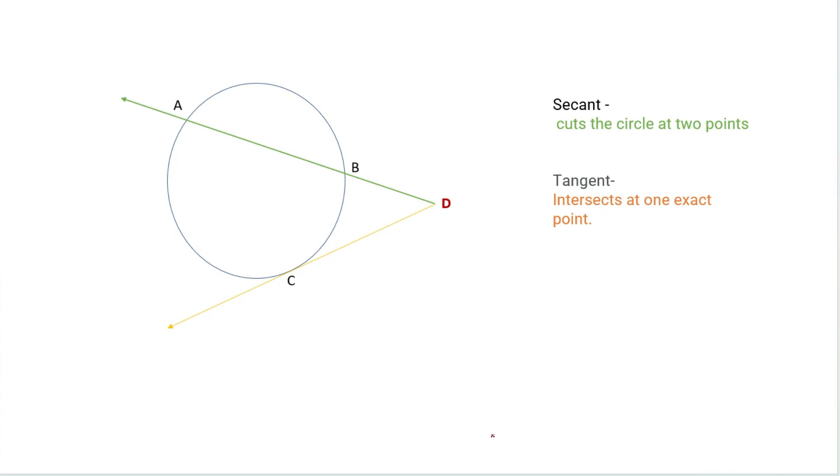I do have another video that I will link up in the info corner, but when we're talking about the angle outside the circle, here you can see we have a circle and angle D is the angle that we're talking about getting the measurement of. The green line displayed AB is a secant that hits the circle at two points, and line C is a tangent that hits the circle at exactly one point.